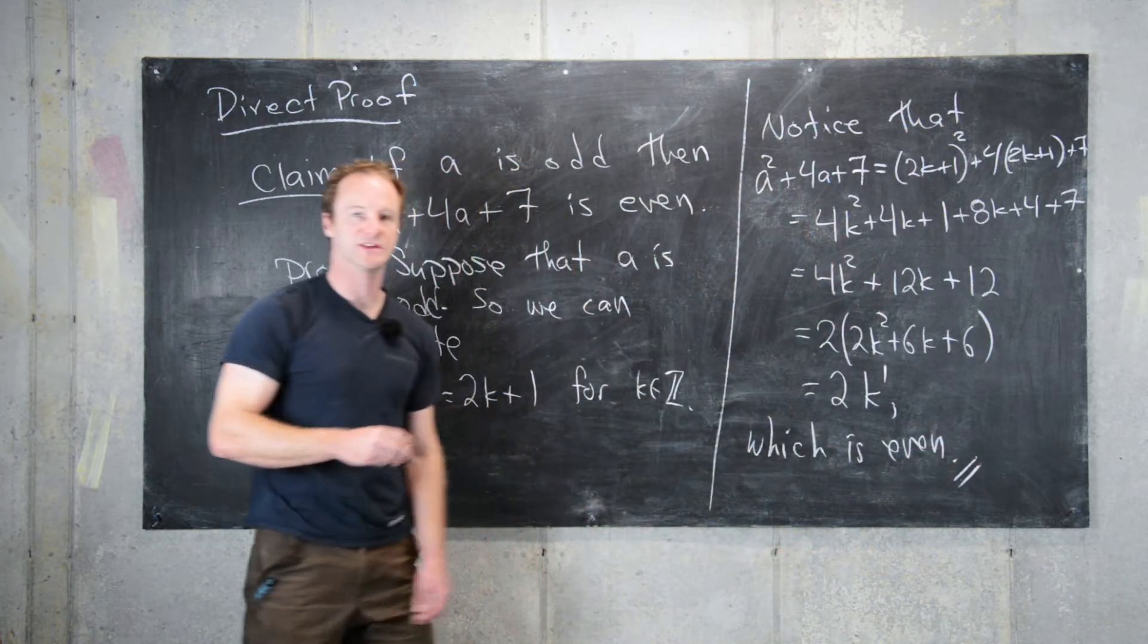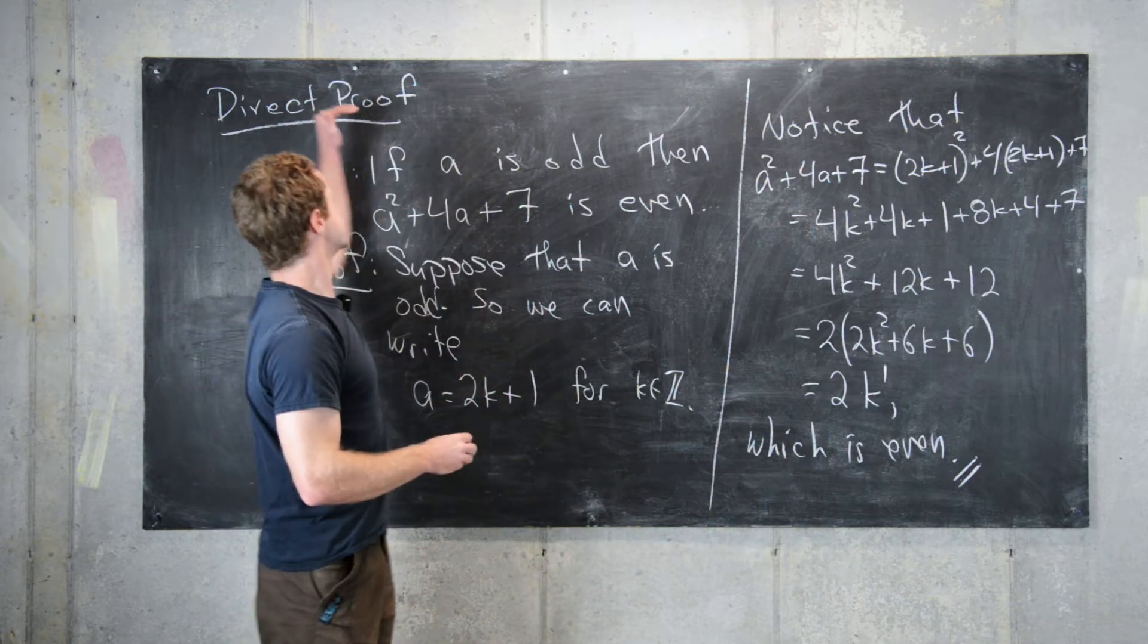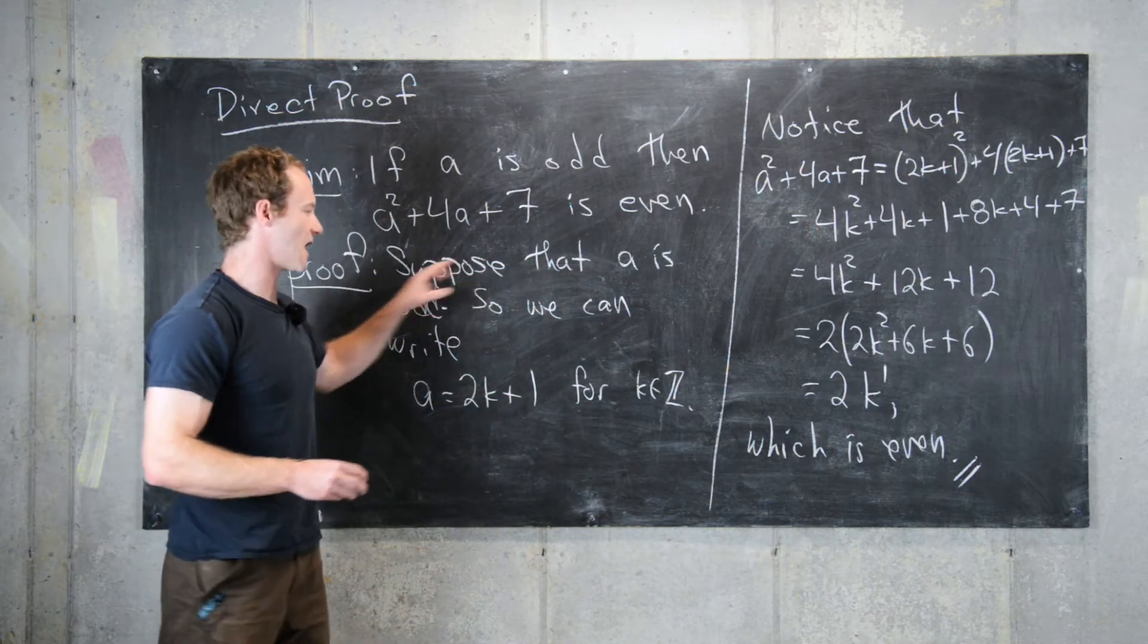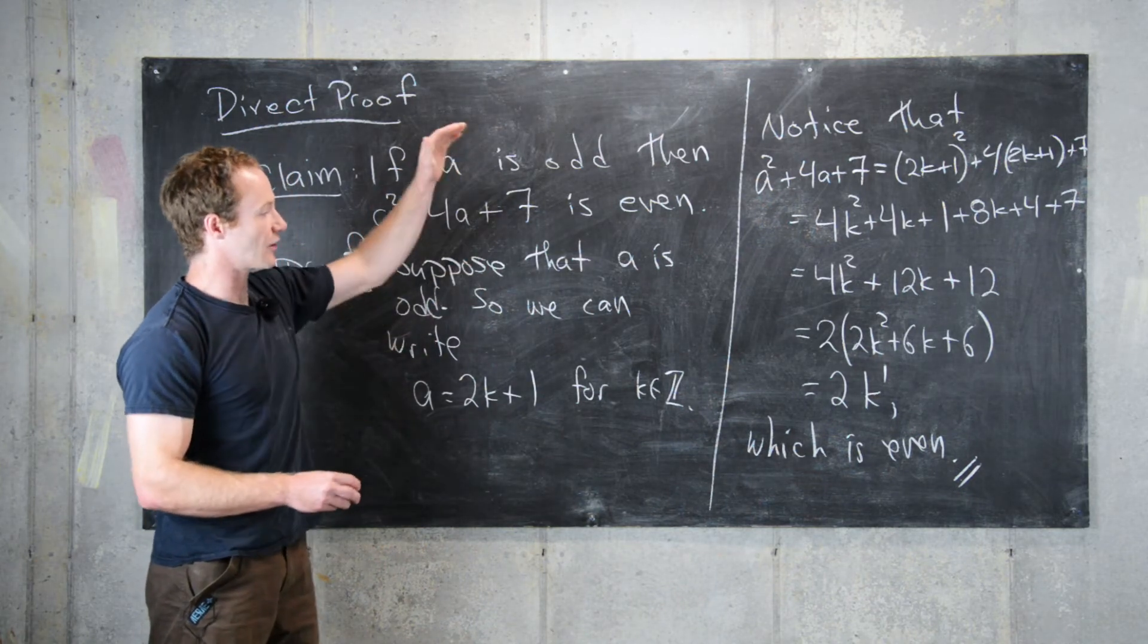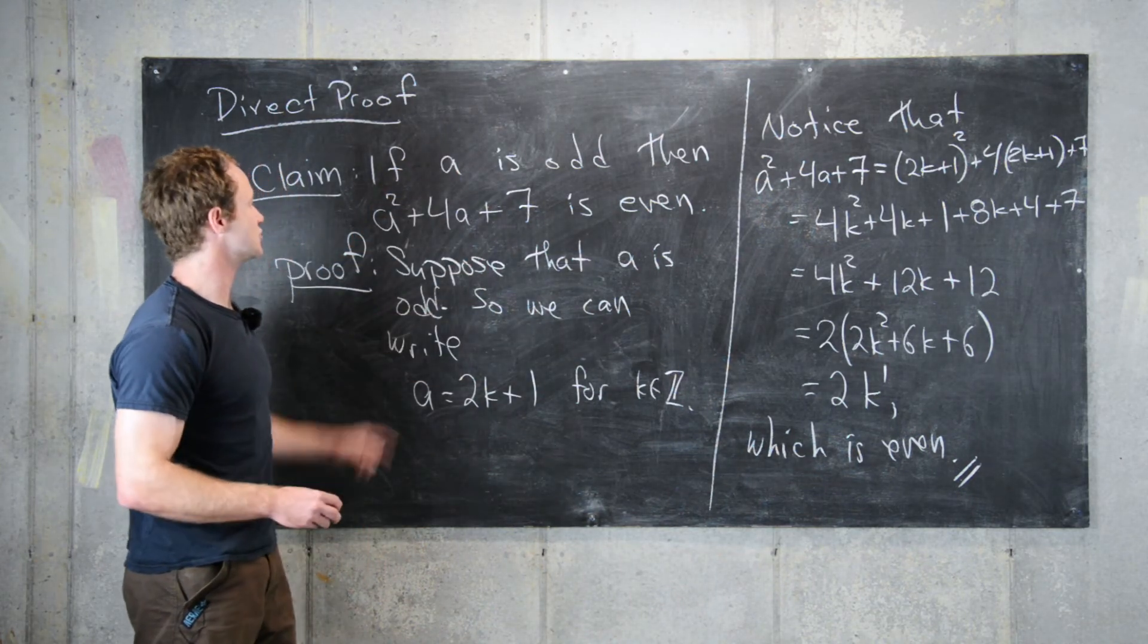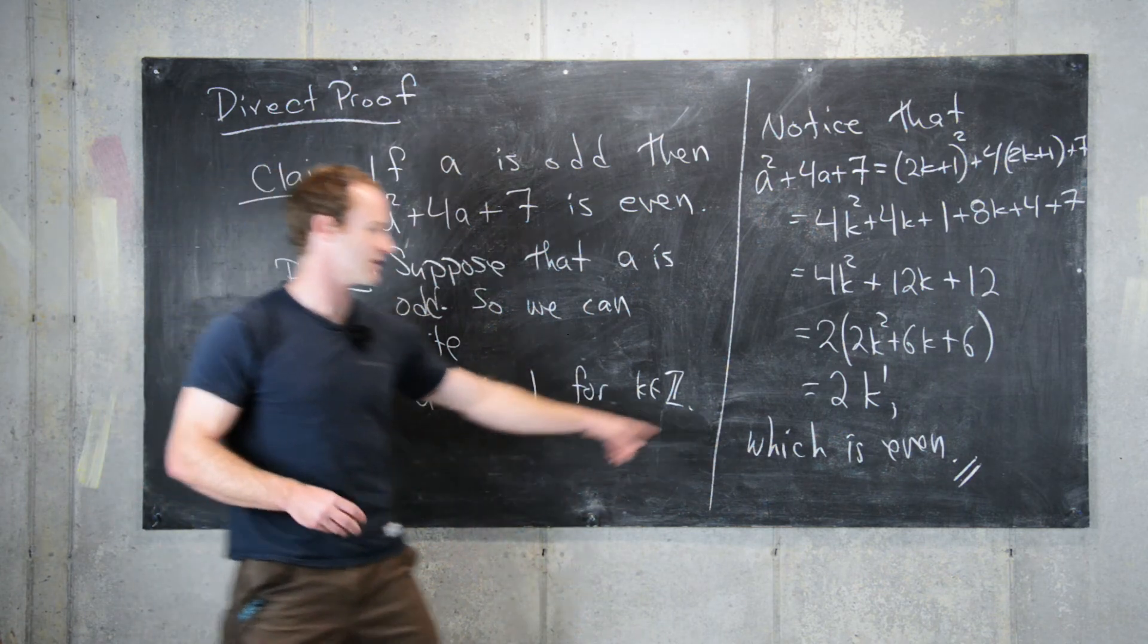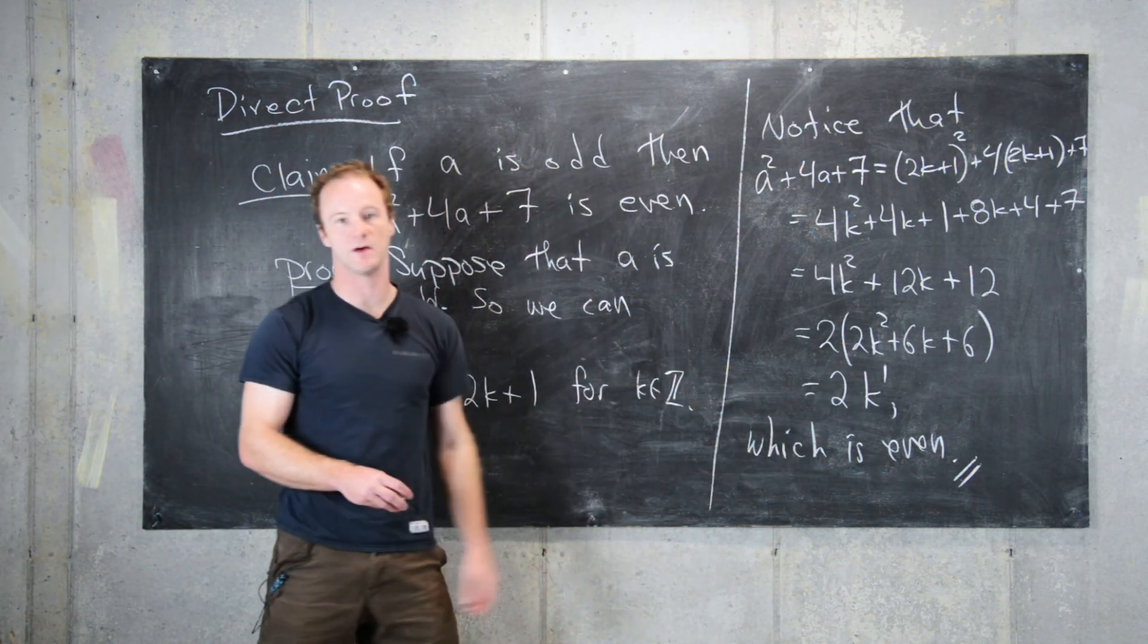That completes the proof. We used the method of direct proof. We supposed the hypothesis and then did a calculation that brought us to the conclusion—in this case, that this expression is even because it's twice some integer.